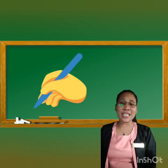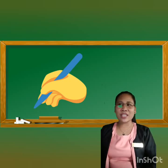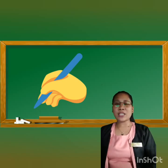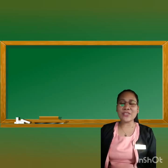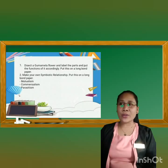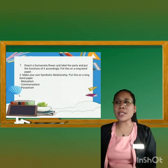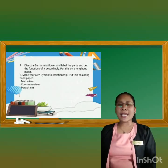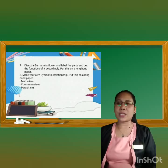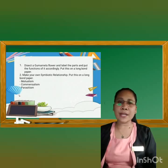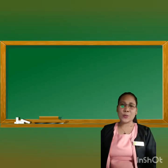Now we are going to have an individual activity where you can show your creativity in drawing and designing. The instructions are: first, sketch a gumamela flower, label the parts, and put the function of each part accordingly — put this on a long bond paper. Second, make your own illustration of symbiotic relationships — mutualism, commensalism, and parasitism — also on a long bond paper. That is your activity. You may start now.